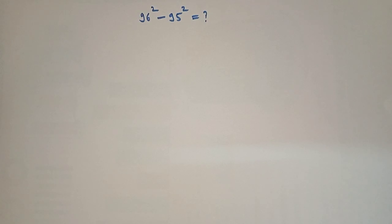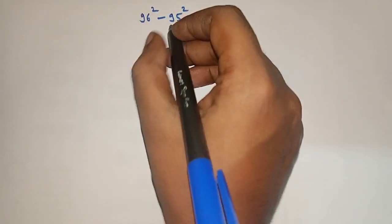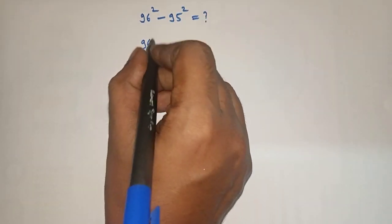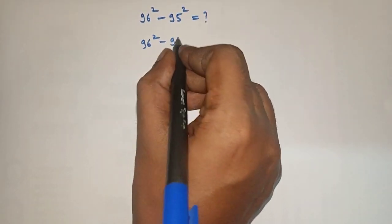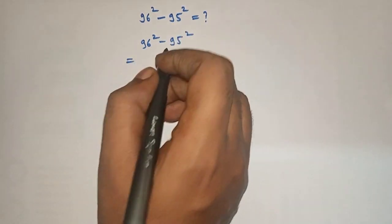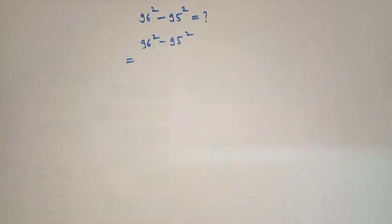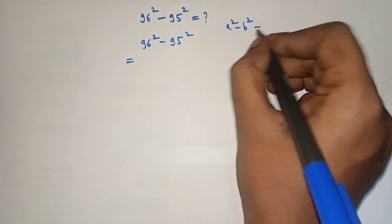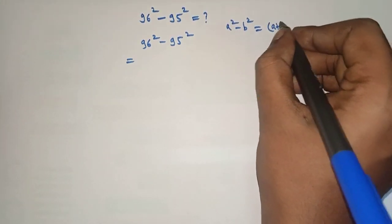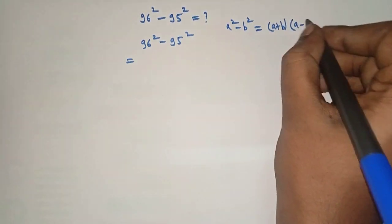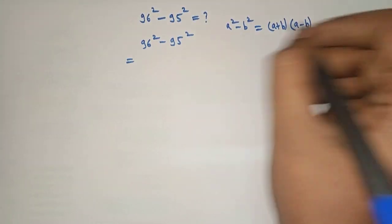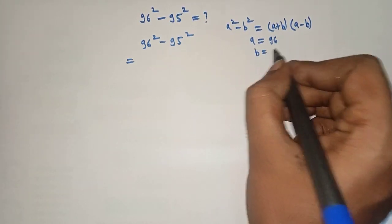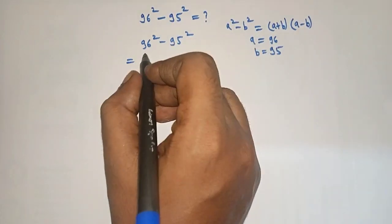Hello friends, welcome to Aha Math. 96 squared minus 95 squared equals what? To solve this, we will use the formula: a squared minus b squared equals a plus b into a minus b. Here, a will be 96 and b will be 95.